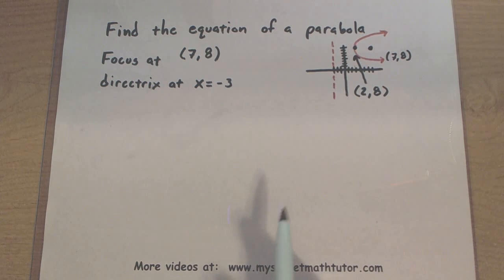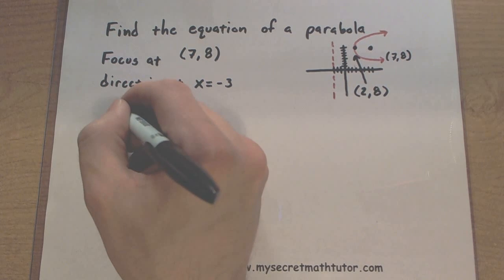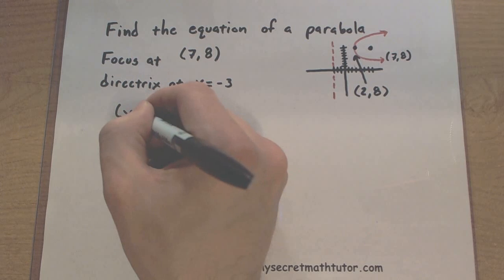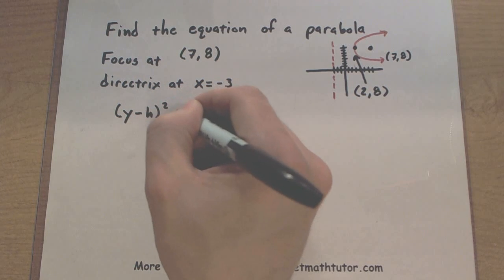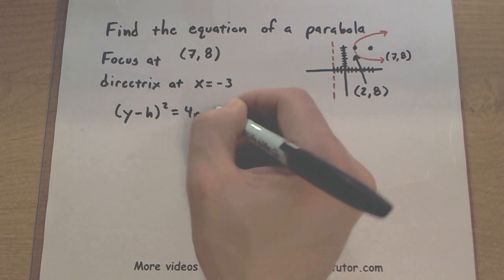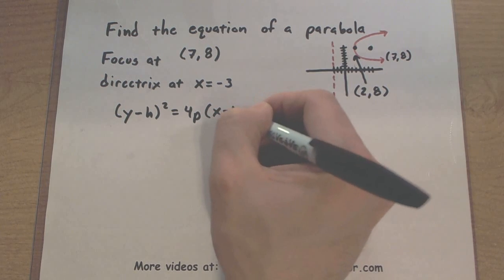Alright, so now that we know this, we can start with our template for a parabola. And since it's on its side, this template looks like (y-h)² equals 4p(x-k).